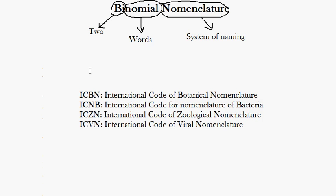Binomial nomenclature was first started by Gaspar Bohin, but he is not so famous. The father of binomial nomenclature is Carolus Linnaeus. After Carolus Linnaeus introduced it, many naturalists from different parts of the world started to develop it further and develop more rules to make binomial nomenclature more standard.